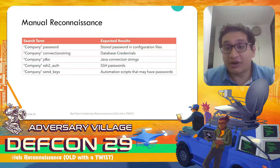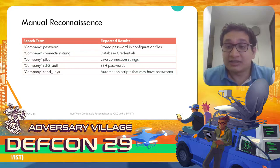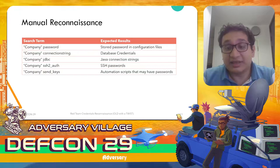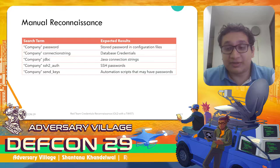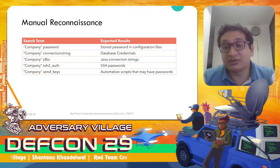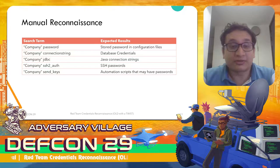For manual reconnaissance, searching for the company name and 'password' will find stored passwords in configuration files. Searching for the company name and 'connection string' will find database credentials. You can also look for SSH passwords using the keyword 'SSH2_auth.' 'SendKeys' is a personal favorite — it can find automation scripts used by testers who sometimes commit passwords to Git repositories.